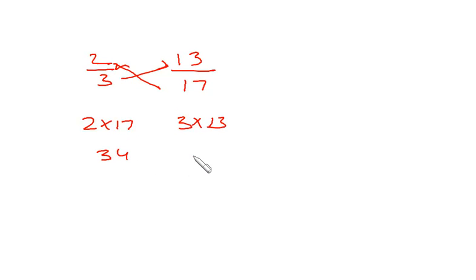Now let's take one more example. I'm having 2/3 and 13/17. Now let's cross multiply. It's 2 into 17, it's 3 into 13. So it's 34, it's 39. Since 39 is greater than 34, 13/17 will be greater than 2/3.